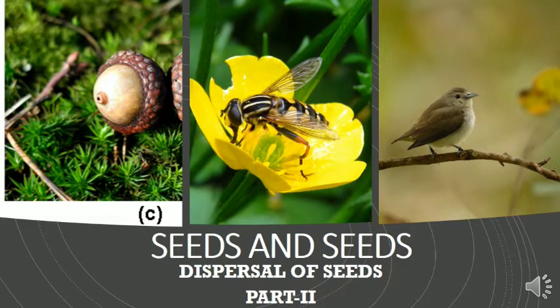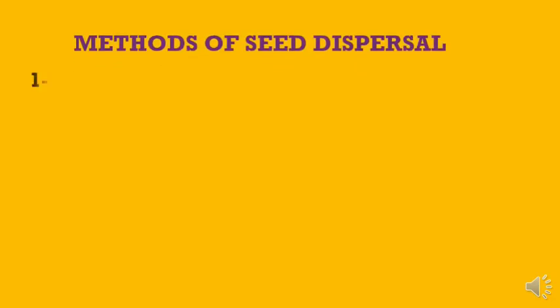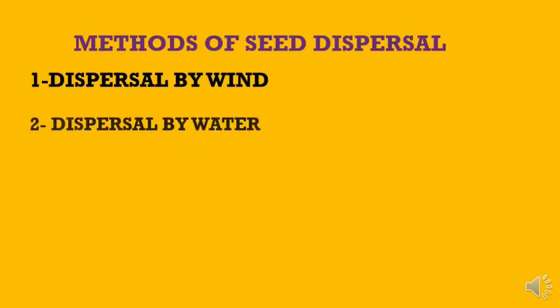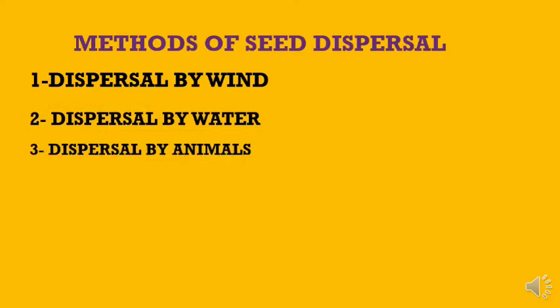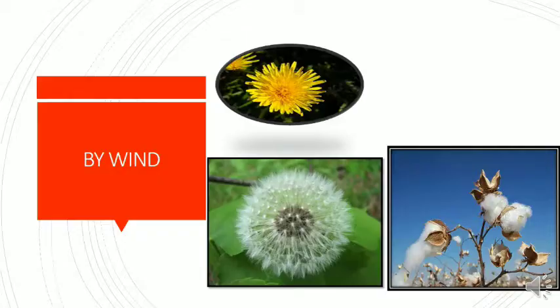Today we will discuss dispersal of seeds. Dispersal of seeds is a process where seeds are scattered away from the mother plant. Methods of seed dispersal include dispersal by wind, dispersal by water, dispersal by animals, and dispersal by explosion. Let us explore it by seeing various pictures related to it.